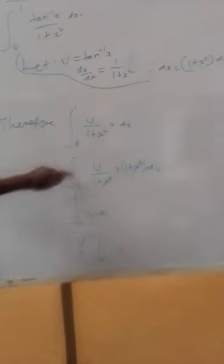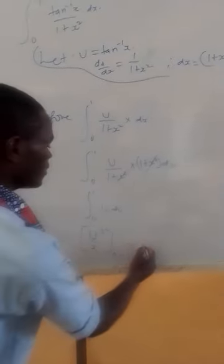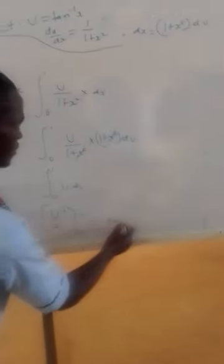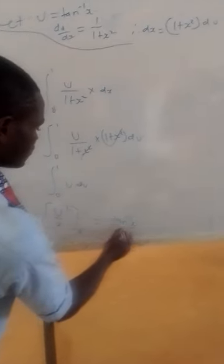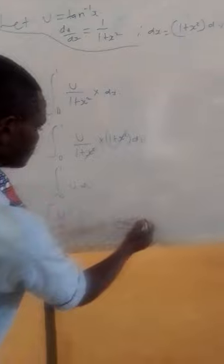But we were told the value of u is tan inverse x. So we have tan inverse over 2. But this one is squared.